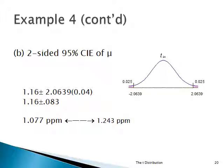Same problem — no claim was made. We just want to construct a confidence interval based on the sample evidence. We take 1.16 — that's the sample mean — plus or minus 2.0639, the critical value for a two-sided t, splitting the 5% into 0.025 and 0.025, so we use 2.0639. T24 times the standard error of the mean, which is 0.04. The margin of error is 2.0639 times 0.04. Constructing the confidence interval: on the left we have 1.077 parts per million, all the way up to 1.243 parts per million of benzene. If the government doesn't want more than 1 part per million, they're in trouble.